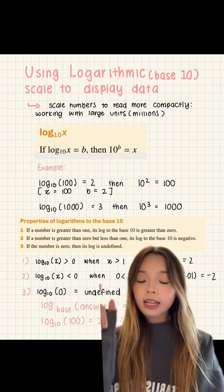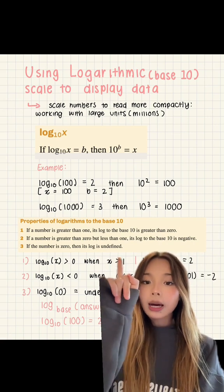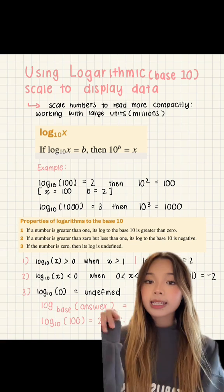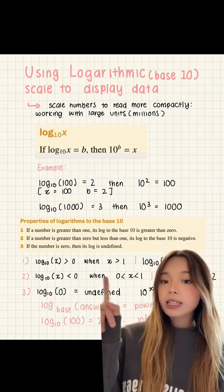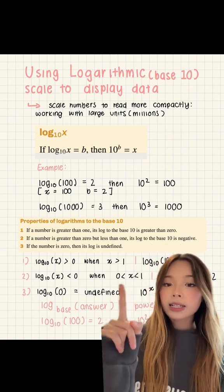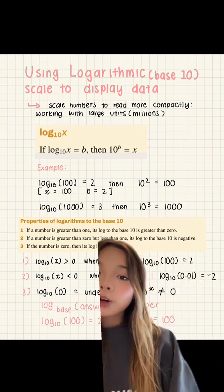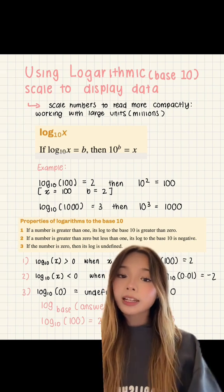The second property is that if a number is greater than 0 but less than 1, its log to the base 10 is negative. So log 10x is less than 0 when x is between 0 and 1. For example, log 10 of 0.01 equals negative 2.